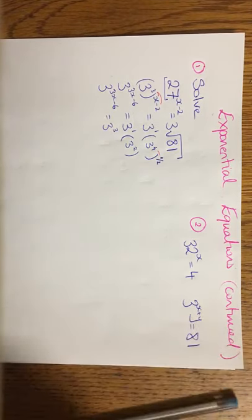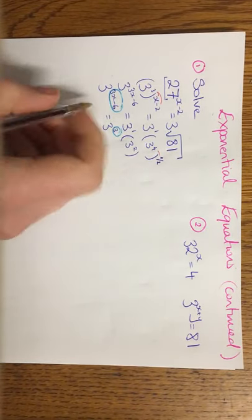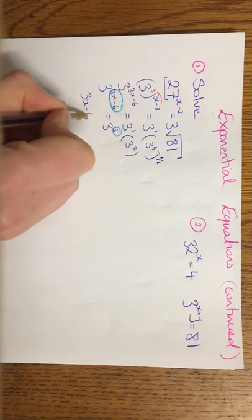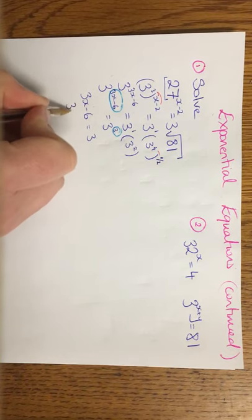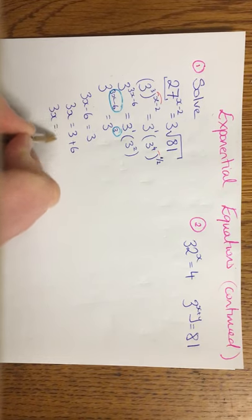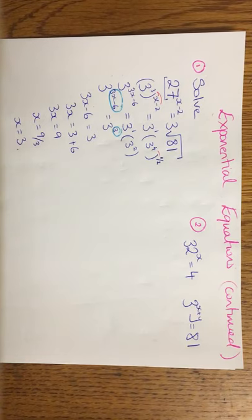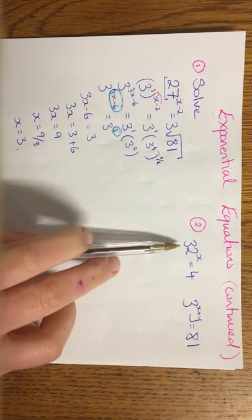Circle, circle, and put them equal. So I have 3x minus 6 is equal to 3. 3x is equal to 3 plus 6. 3x is equal to 9. x is equal to 9 over 3. x is equal to 3.